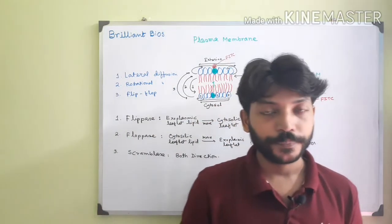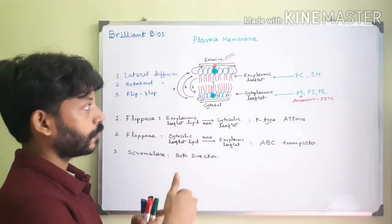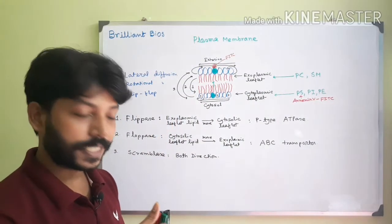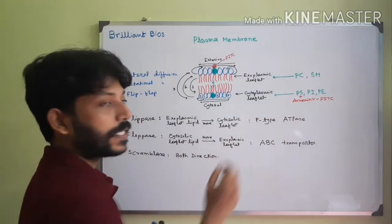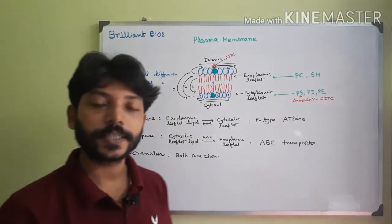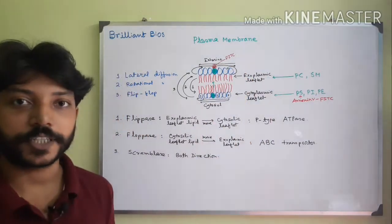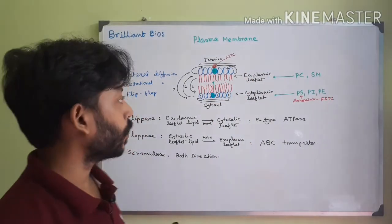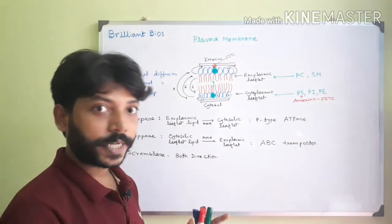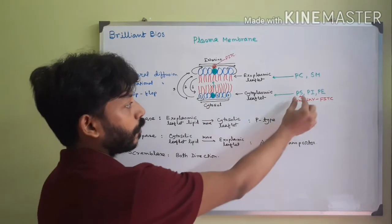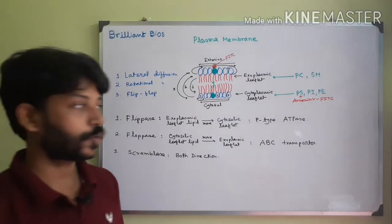Another example is when blood clotting occurs. The phosphatidylserine present in the cytosolic leaflet of platelet plasma membranes goes to the exoplasmic leaflet and activates clotting enzymes. This is very important — the phosphatidylserine in the platelet plasma membrane moves to the exoplasmic leaflet to activate the clotting enzyme.